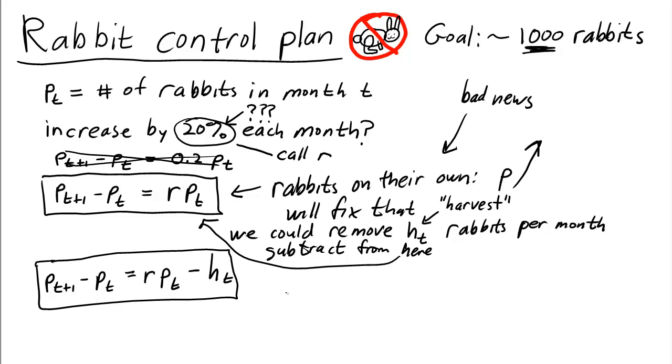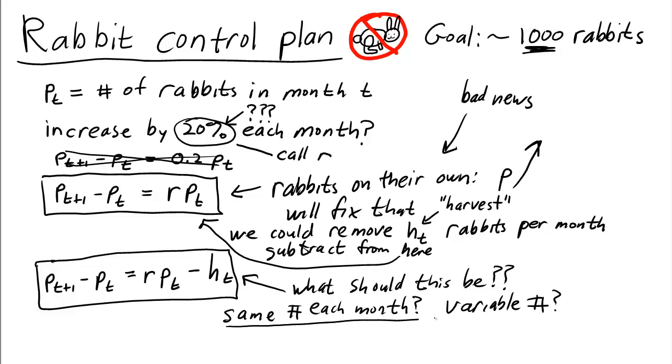We have that the change in the population is this reproduction minus our harvesting. Alright, but what should this harvesting be? That is a tough question. Should we remove the same number each month? Or a variable number? This is going to be a hard challenge.